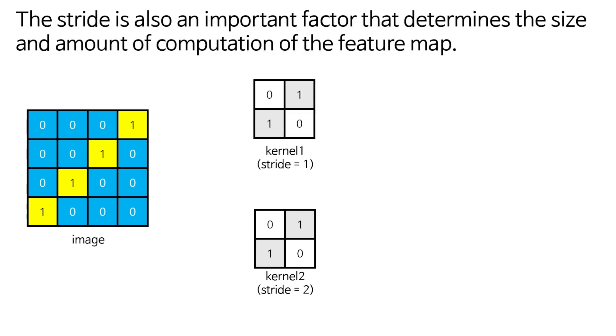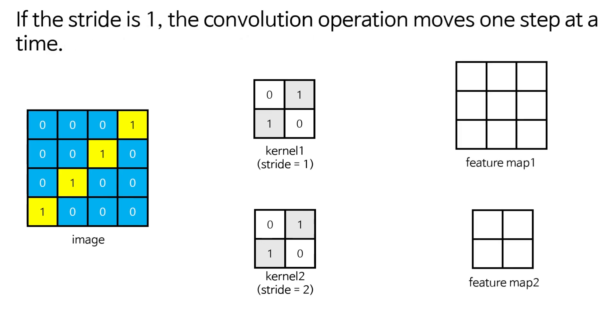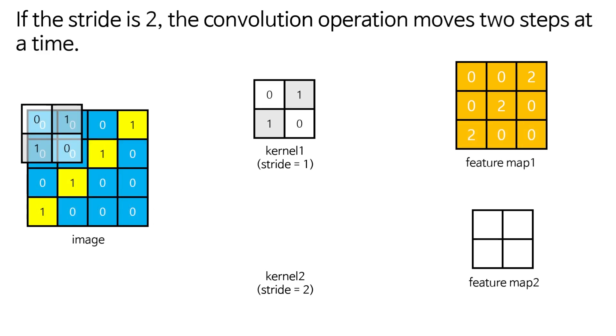The stride is also an important factor that determines the size and amount of computation of the feature map. If the stride is 1, the convolution operation moves one step at a time. If the stride is 2, the convolution operation moves two steps at a time.